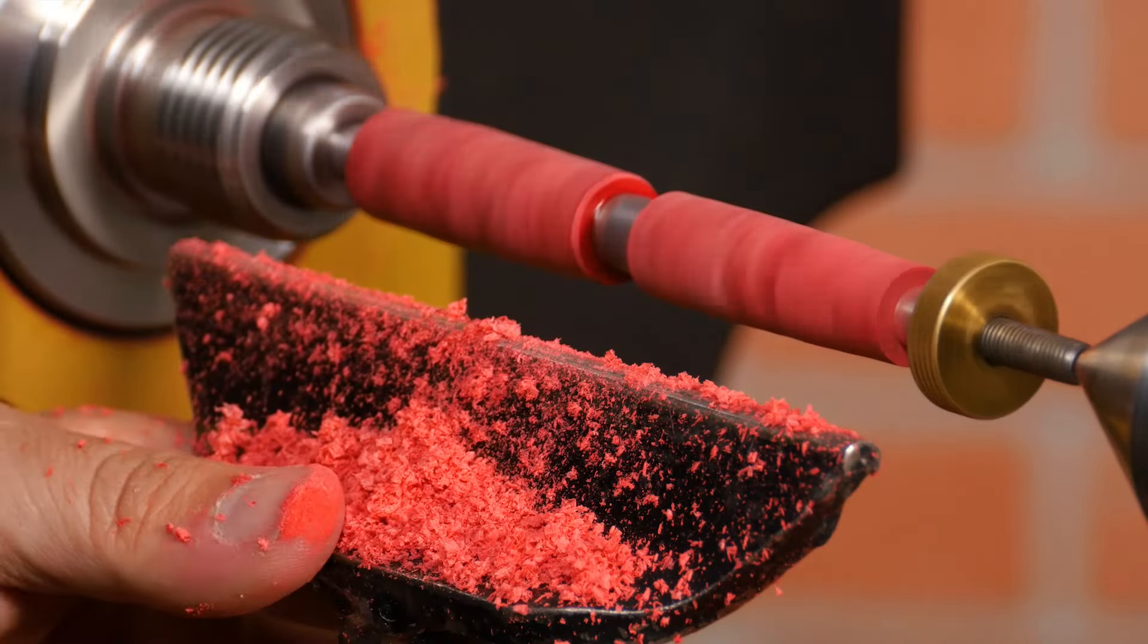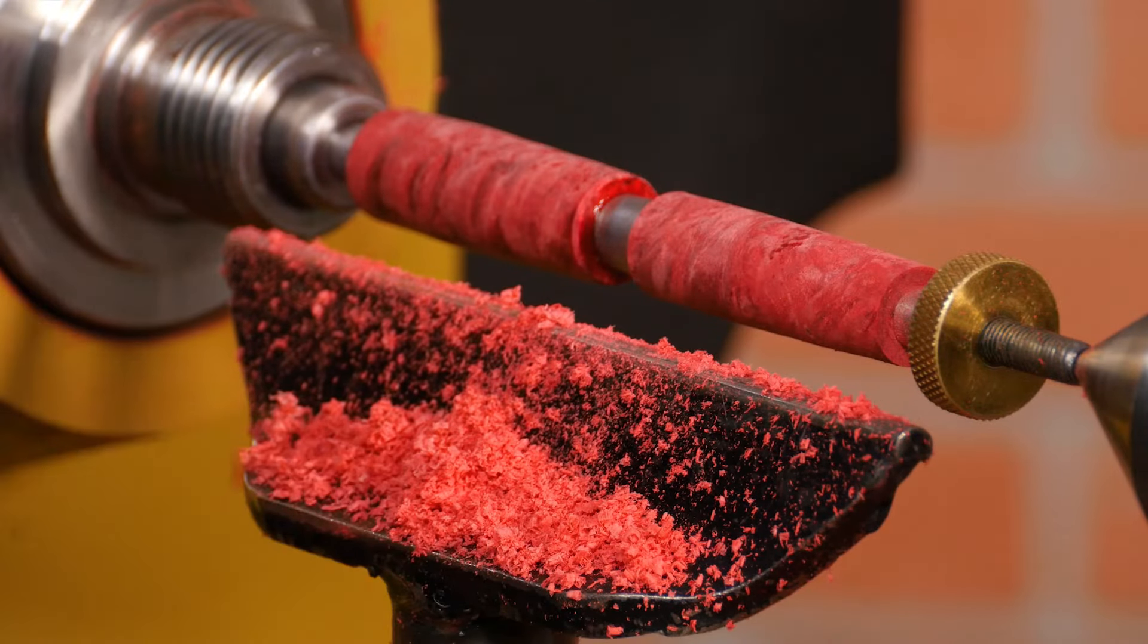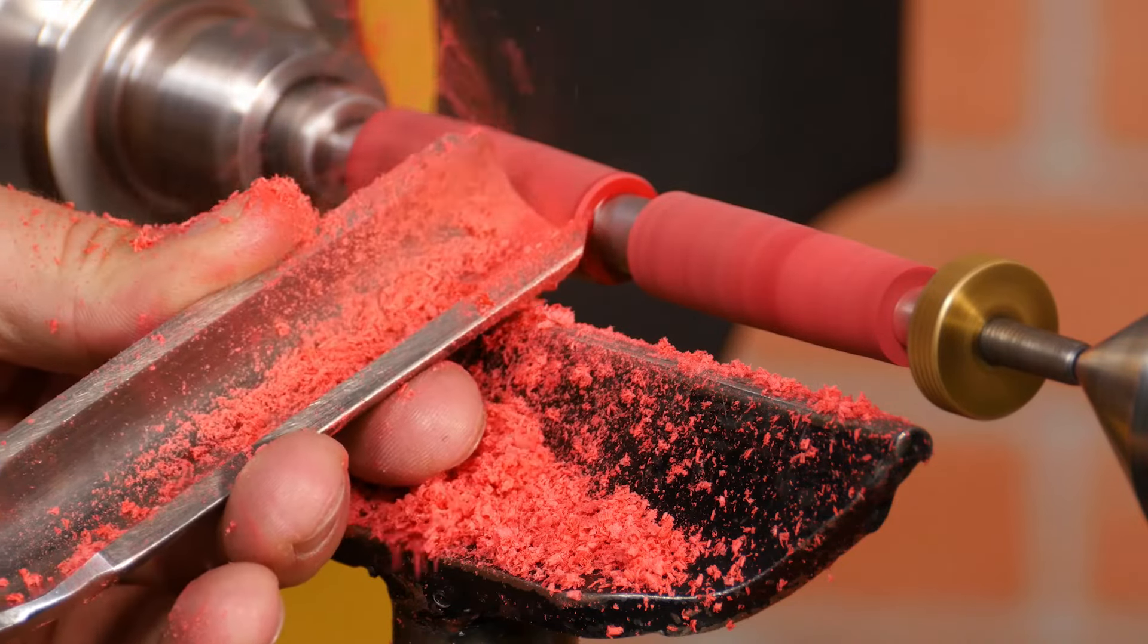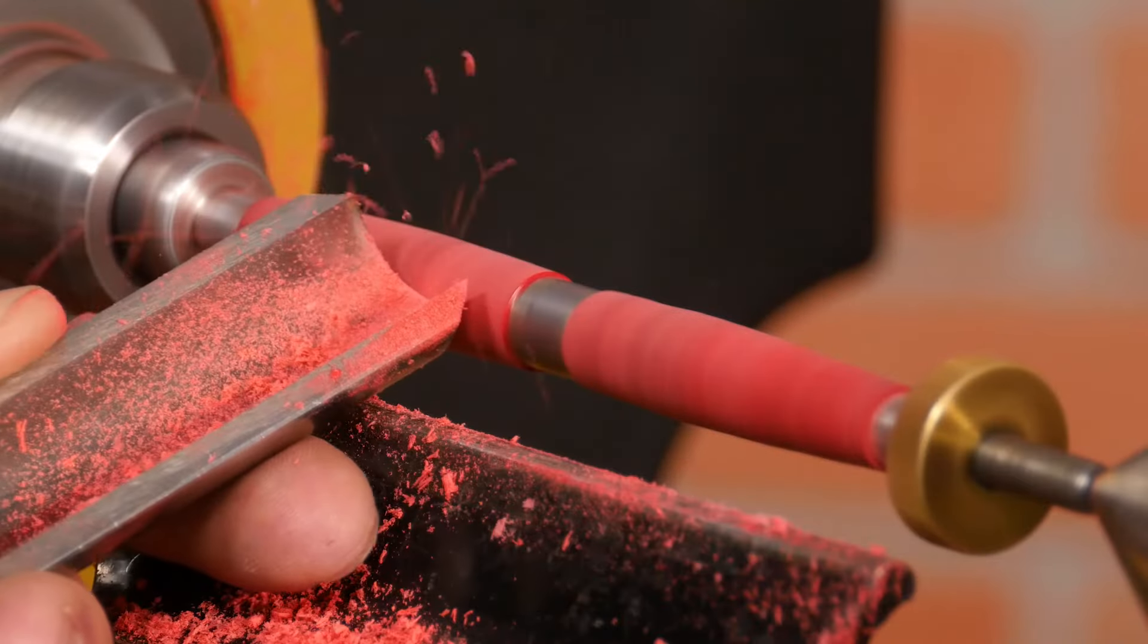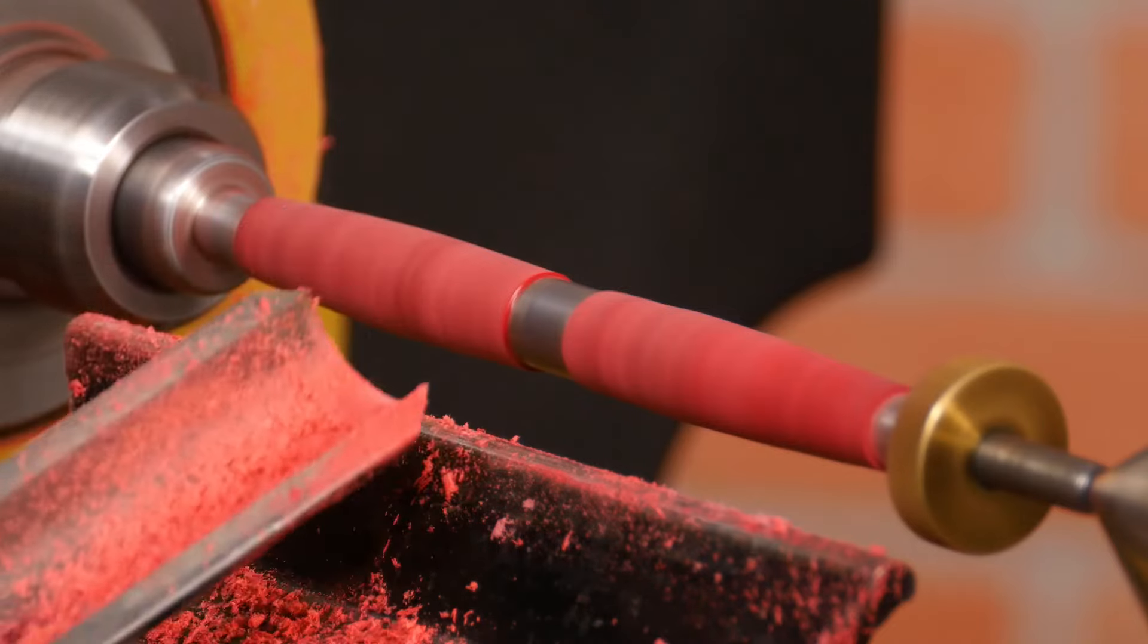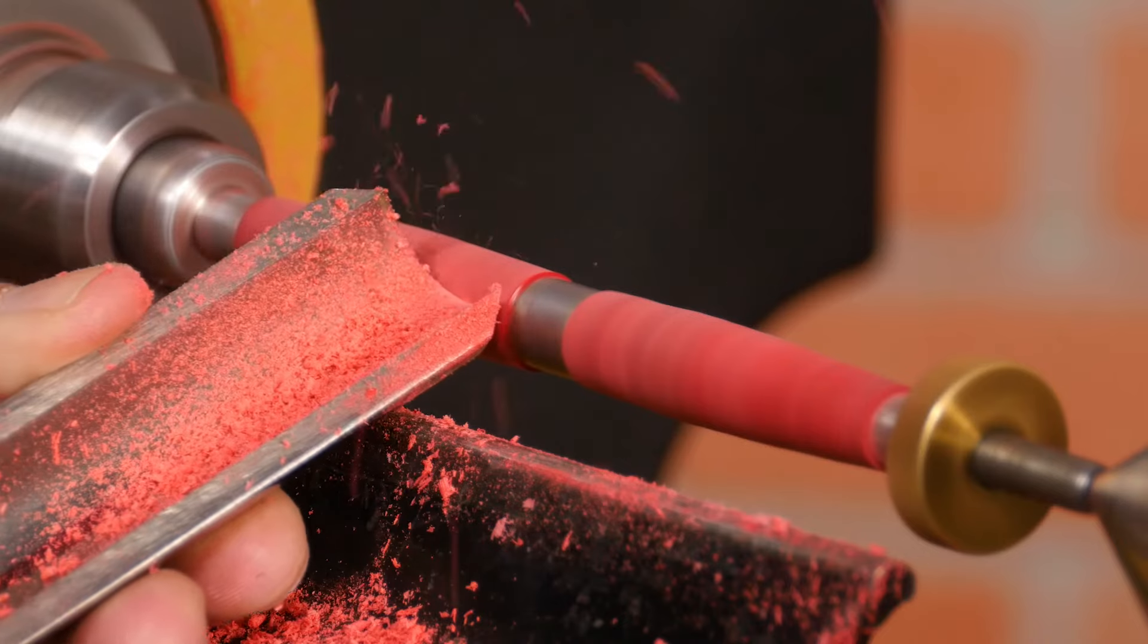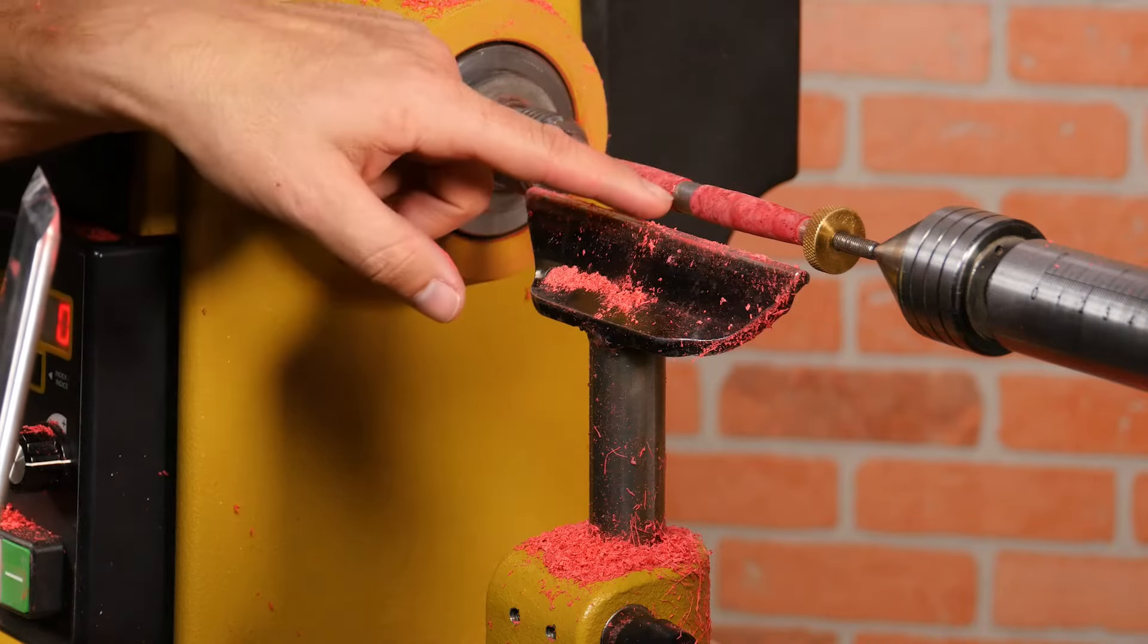Once the blanks are round, turn off the lathe and move the tool rest closer. Now turn the blanks to shape. Keep an eye on the bushings as you turn. They not only hold the blank in place, but are also a gauge for the finish diameter of the pen.